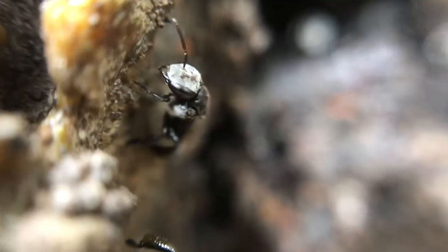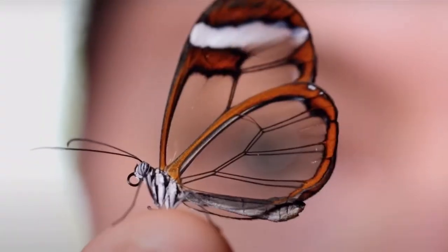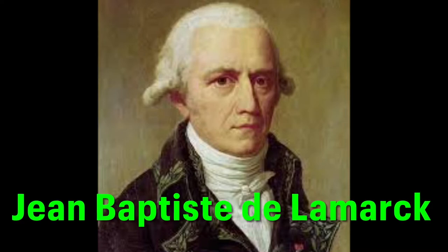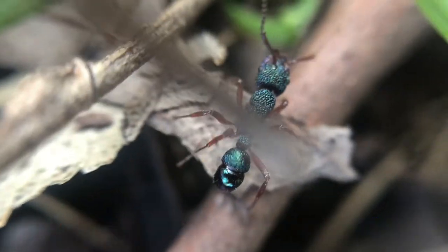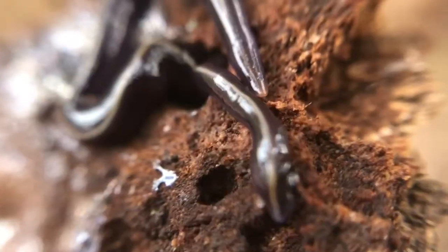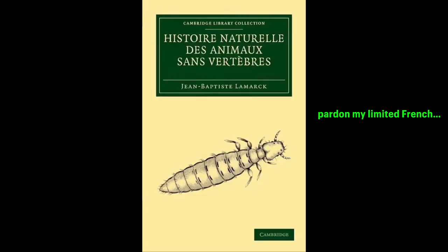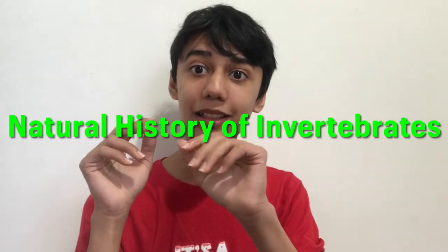And this is where we reach an important character in our story about the guy who invented the invertebrate: a man known as Jean-Baptiste de Lamarck. He ignored the Linnaeus classification of animals without backbones and separated the arachnids from insects, crustaceans from echinoderms, etc. He published his work in the book Histoire naturelle des animaux sans vertèbres, or Natural History of Invertebrates.